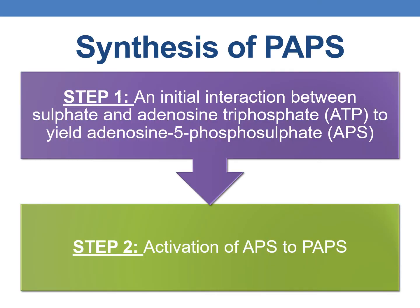The synthesis of PAPS also occurs in two steps. Step one is an initial interaction between sulfate and ATP to form adenosine 5-phosphosulfate (APS). The second step is the activation of APS — adenosine 5-phosphosulfate — to PAPS.